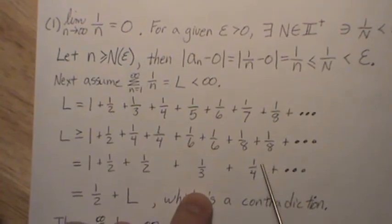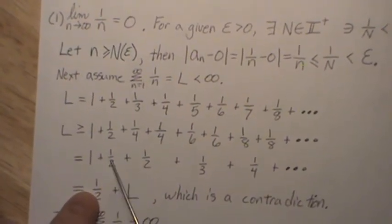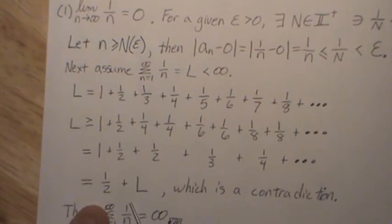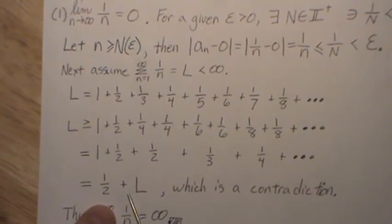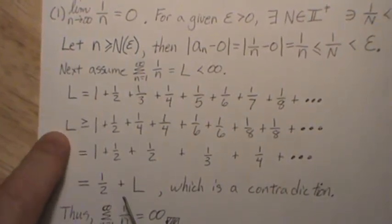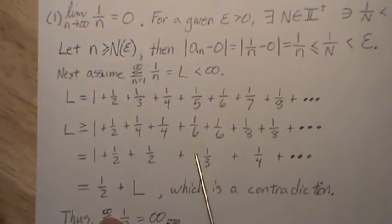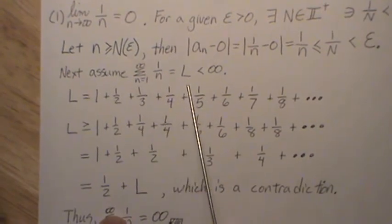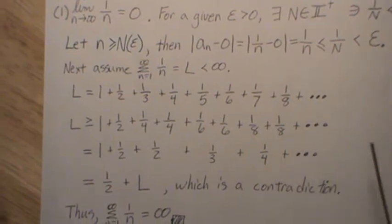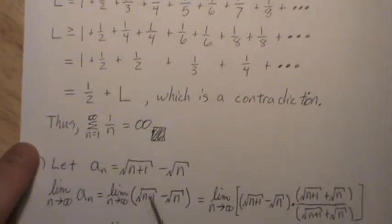This is one third, one fourth, one fifth, etc. So actually if we were to switch these two terms, that's L again, so it's one half L. But this is a contradiction, right? L is bigger than or equal to one half plus L. That's a contradiction. So that says our assumption that this series is finite is false, so it has to be infinite and we've proved it. Thus the series goes to infinity.